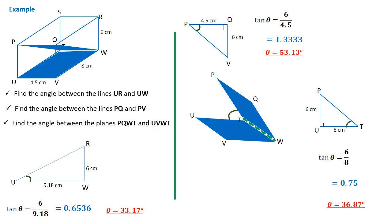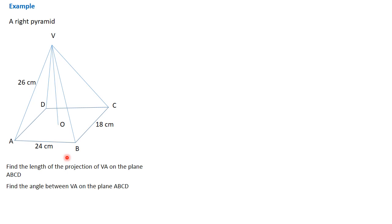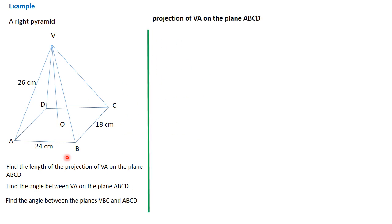Here we go to the next example. Before us is a right pyramid. We're given the questions: find the length of the projection of V,A on the plane A,B,C,D. Again, find the angle between V,A and the plane A,B,C,D. And find the angle between the planes V,B,C and A,B,C,D. Therefore, we start right away.